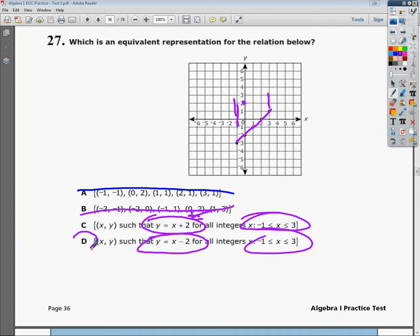D is the correct answer because not only does it set correct limits, it also crosses at the correct Y-intercept, which is minus 2. If you wanted to plug them in, you could do that.